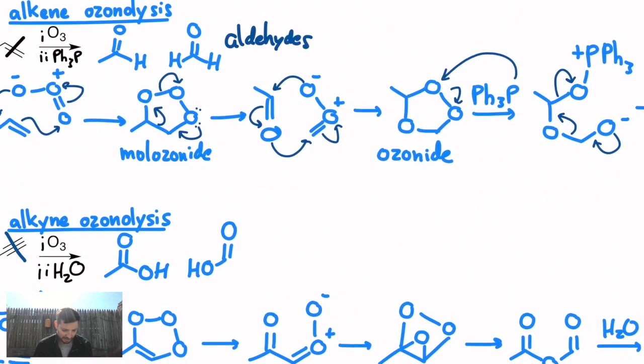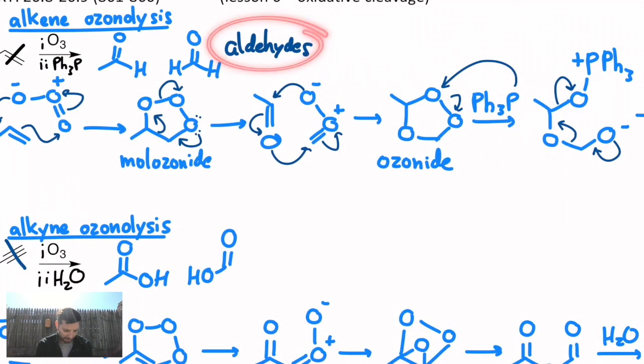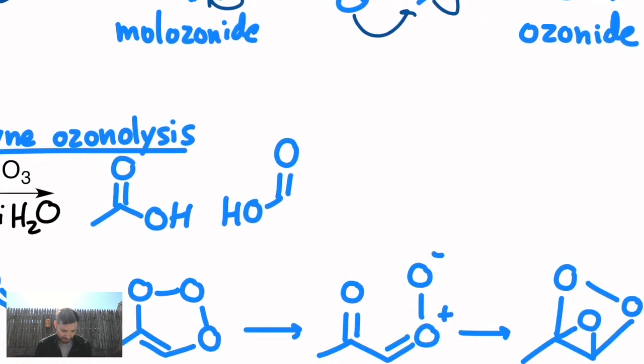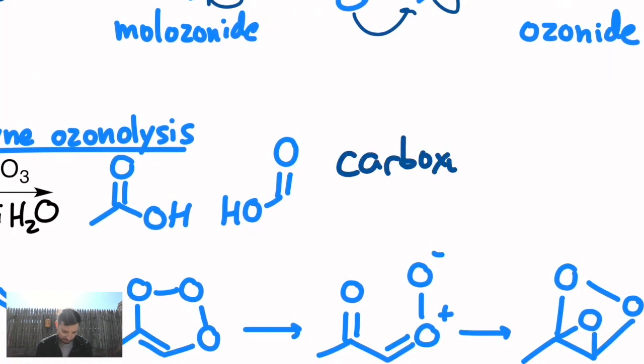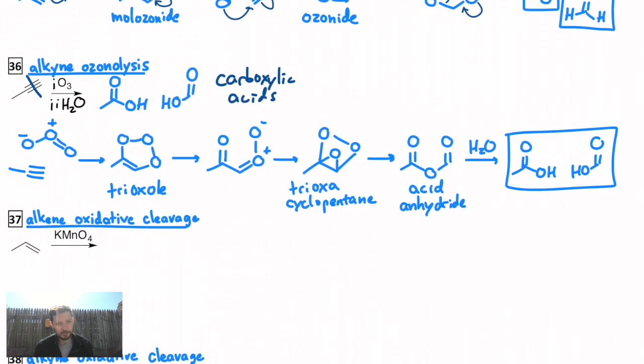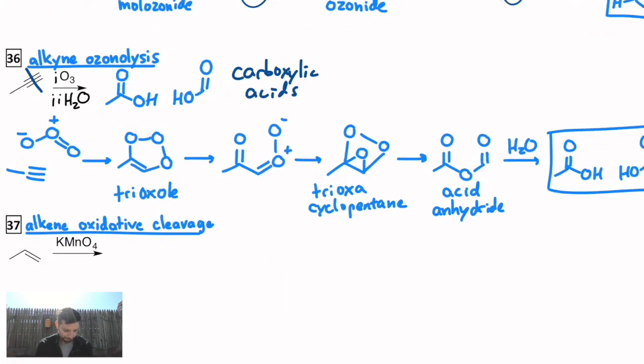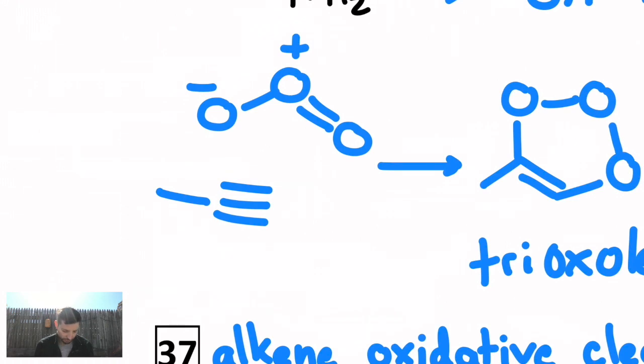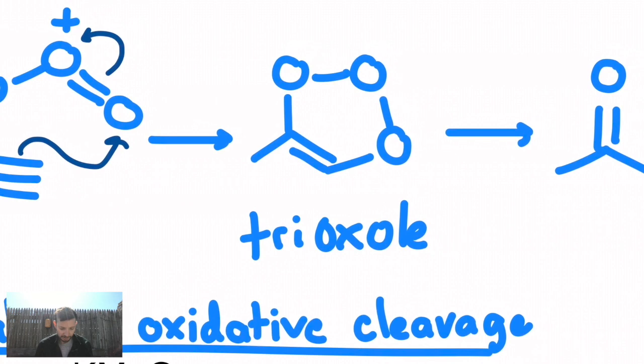So as opposed to alkene ozonolysis, which gives you aldehydes, alkyne ozonolysis gives you carboxylic acids. And as we did before, hit pause and see if you can go back and fill in all the curved arrows for those steps. And let's see how you did. Okay, the first step is the same as what we saw before. The ozone, negatively charged oxygen, attacks that more substituted bond of the carbon-carbon triple bond. The pi bond forms a bond with that oxygen. That pi bond goes to the positively charged oxygen. That's how you get your trioxal.